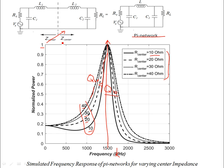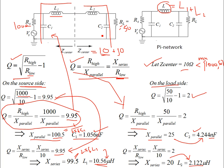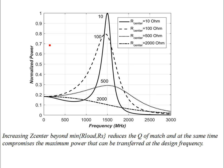What happens if Z_center is increased beyond the minimum — in this case beyond RL = 50Ω? If Z_center equals 50Ω, the term inside the square root becomes zero, meaning you have a very wide-band match with no narrow-band response. Continuing to increase Z_center toward 1000Ω further increases bandwidth while compromising the power being transferred at the design frequency.